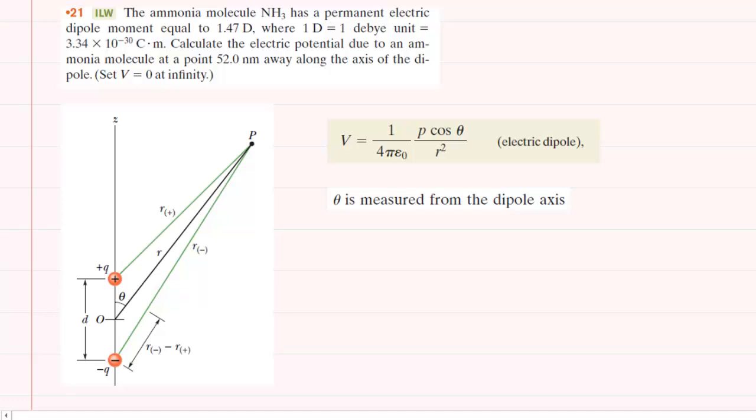We have an electric dipole, which is basically a positive and negative charge of equal magnitude separated by a distance d. A line is drawn from the center of that electric dipole to a point in space that we call point P. Our job is to calculate the electric potential at that point.